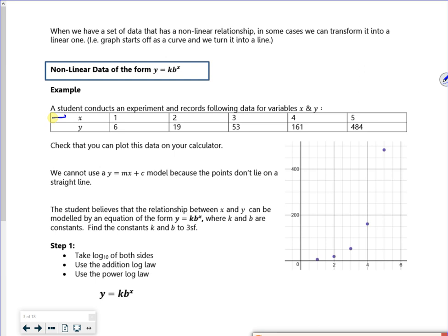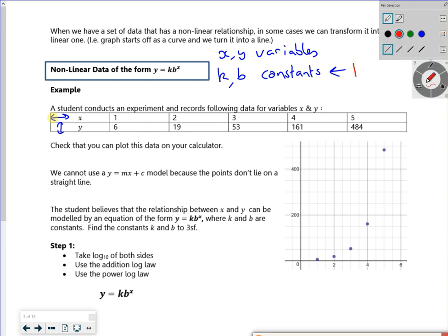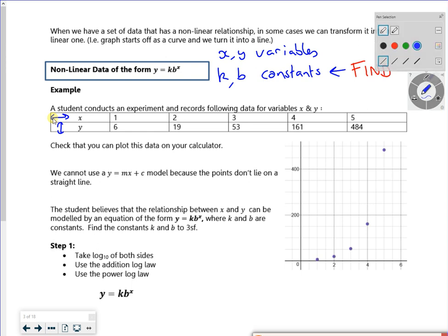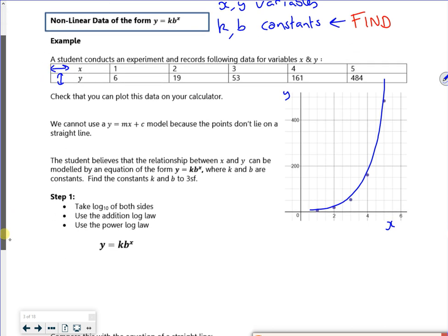So then it says, what if it's not linear? What if it's a curve? Now, if you notice here, x is across and y is up. So x and y are your variables. So k and b are the constants. And this is what we're going to find. So we're going to find these constants by making the curve into a straight line. So if you plot it, we've got like a curve here, you can see this curve going up, which would be x against y.